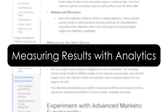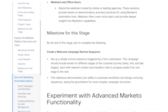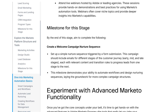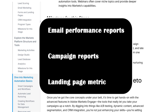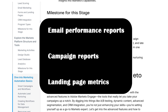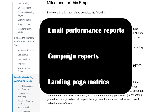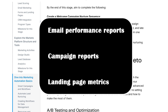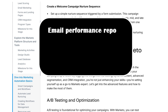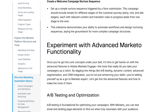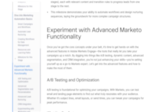Measuring results with analytics. Go to the Analytics tab — this is where you measure what's working. Email Performance Reports, Campaign Reports, Landing Page Metrics. You will see opens, clicks, conversions, and more. You can even send reports to your team automatically.